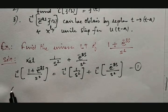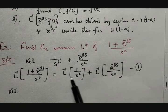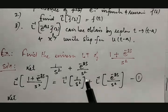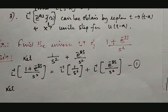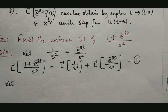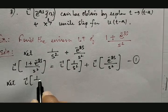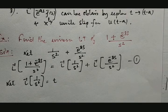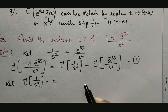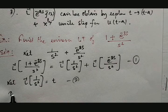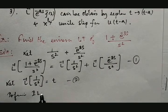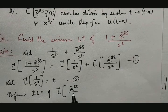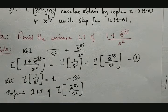Very first, we solve the first part: the inverse Laplace transformation of 1/s² requires no special property — just a simple inverse Laplace transformation. The inverse Laplace transformation of 1/s² equals t. I will call this equation number 2. To find the inverse Laplace transform of e raised to minus 3s divided by s squared, we need to follow the procedure above.